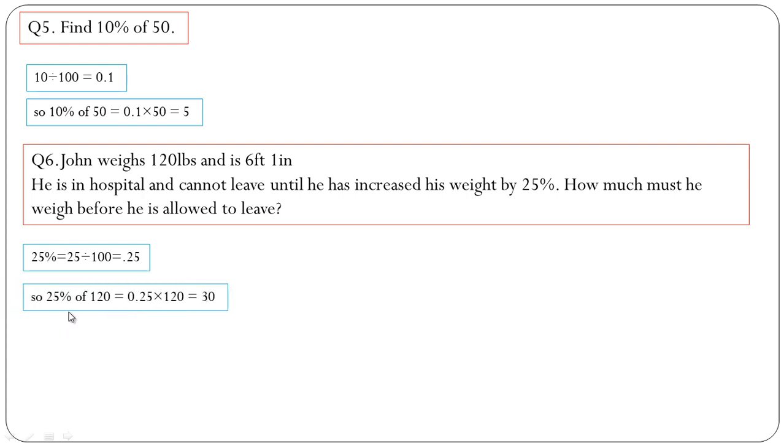So 25 percent of 120 equals 0.25 multiplied by 120, that is 30 kg. His total weight will be the original 120 plus 30, so it will be 150 lbs.